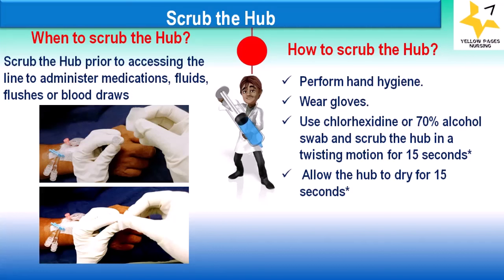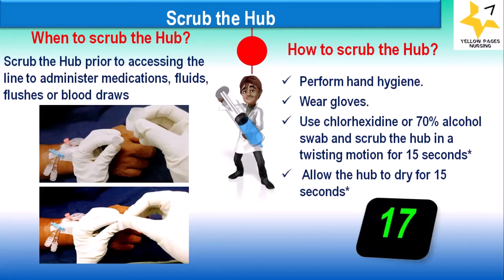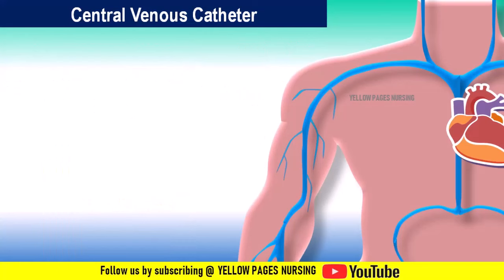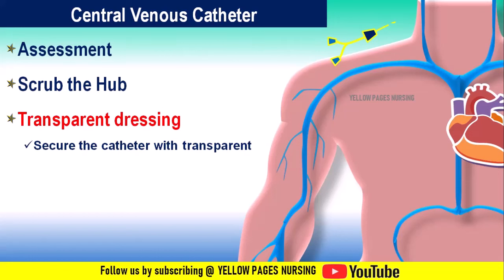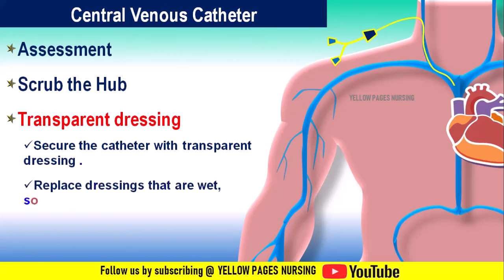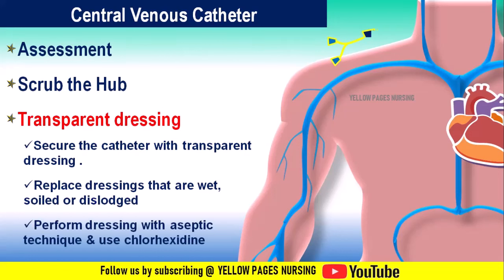Under care of central venous catheters, next is transparent dressing. Secure the catheter with a transparent dressing. Replace dressings that are wet, soiled, or dislodged. Perform dressing changes with aseptic technique and use chlorhexidine.